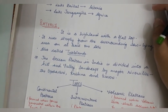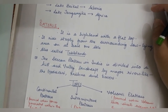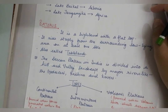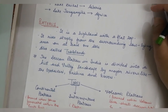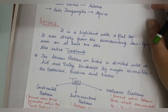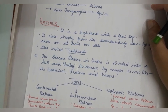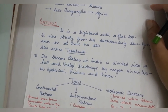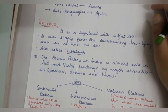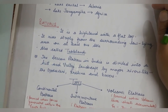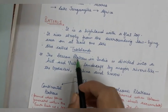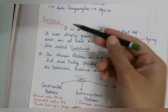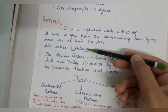The Deccan Plateau is divided by major rivers — Godavari, Krishna, and Kaveri. Due to the action of these rivers it is divided into hill and valley landscape. Plateaus are known as stable lands. The Deccan Plateau in India is an important example.